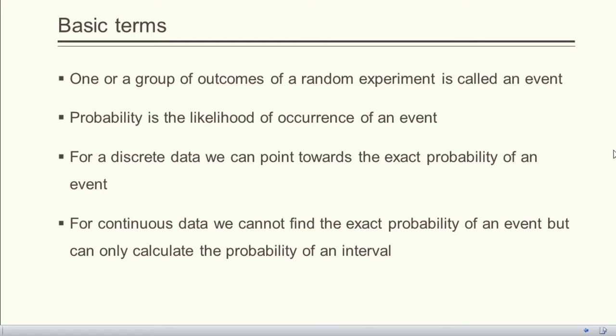For discrete data, we can point towards the exact probability of an event. For continuous data, we cannot find the exact probability of an event but can only calculate the probability of an interval. This is because when we say weight is 52.5 kg, it is not exactly 52.5 kg — a more accurate weighing machine may give 52.53, and a further more accurate machine 52.534, and so on. That's why for continuous data we can only find the probability of an interval.